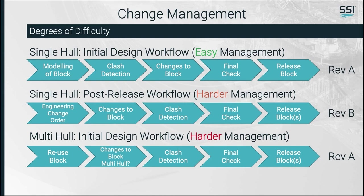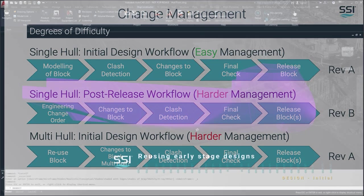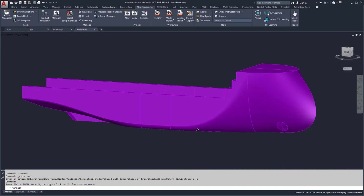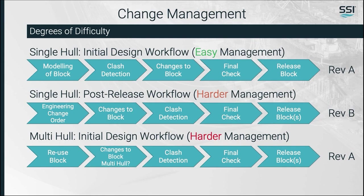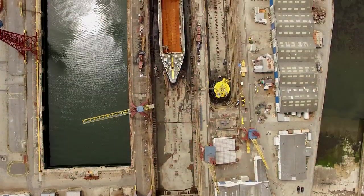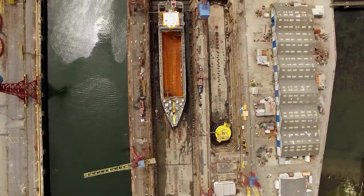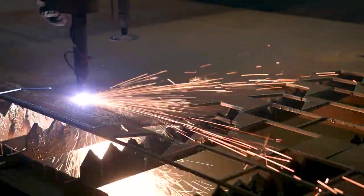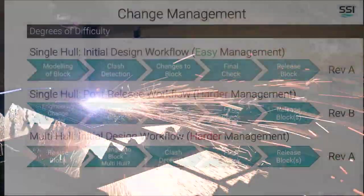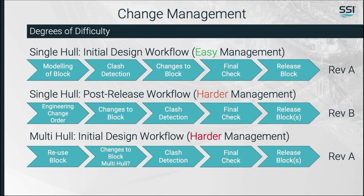Then we have the initial design for the second vessel of class, where the original hull is used as the baseline for the first of possibly many sister ships. When we make a change to the second ship, we need to decide if those changes are also applicable to the original ship. Often the first ship will only be half built when the yard starts cutting steel for the second ship, so any production-driven changes will need to be seamlessly incorporated into the sister ships in the class.